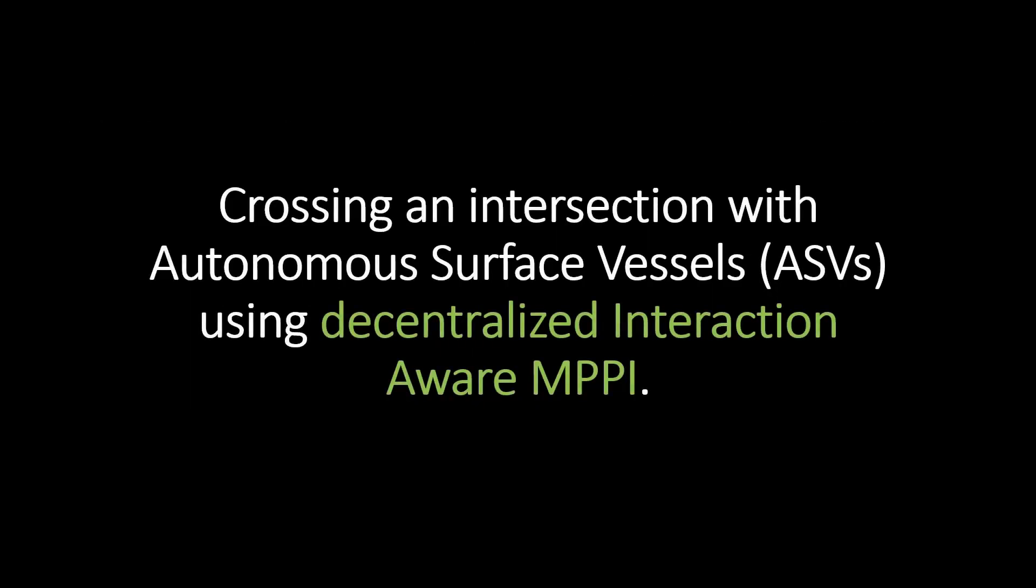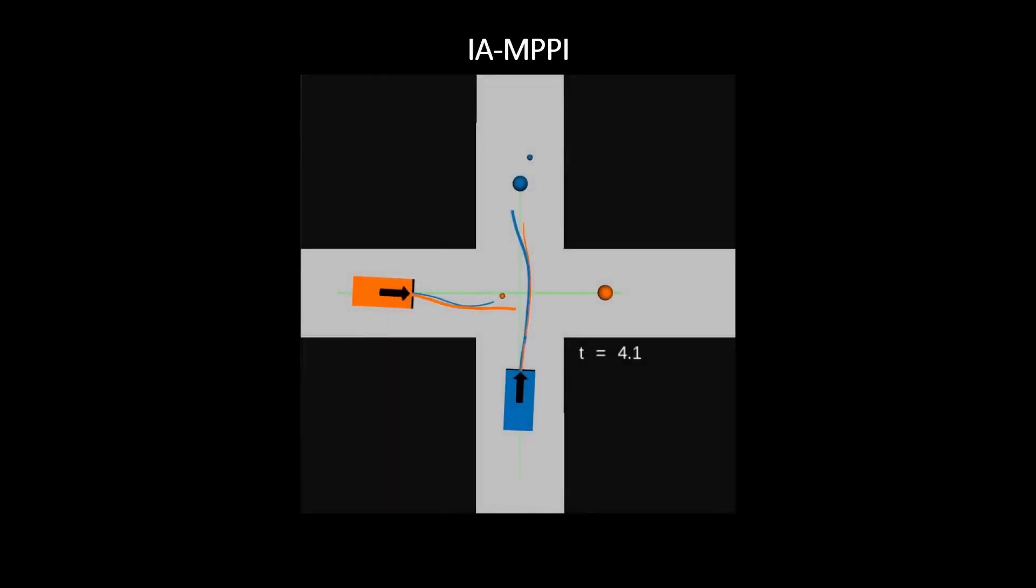The next experiment involves two agents crossing an intersection using the decentralized interaction-aware MPPI. Interaction-aware MPPI is a motion planner based on model predictive path integral control capable of simultaneous prediction and planning. The large orange sphere is the local goal the orange agent needs to reach, while the small blue dot is the local goal predicted by the orange agent for the blue agent using a constant velocity model.